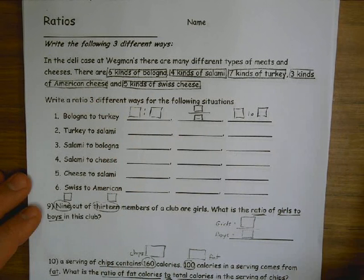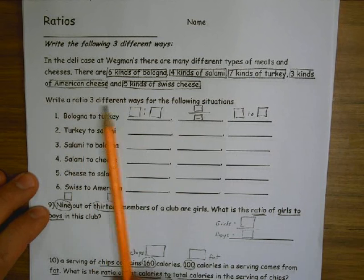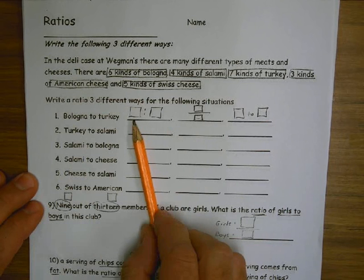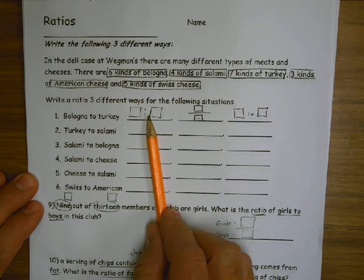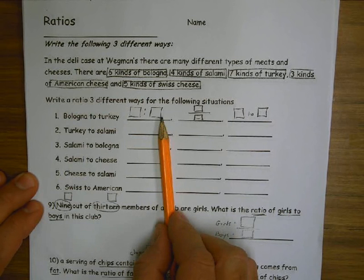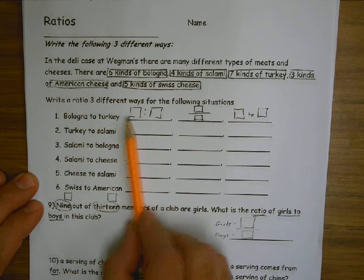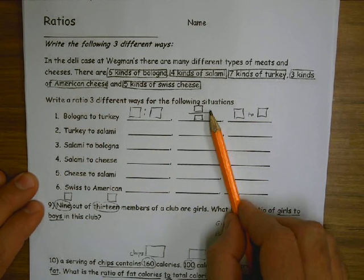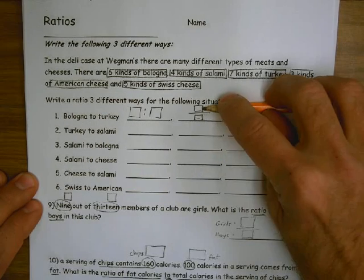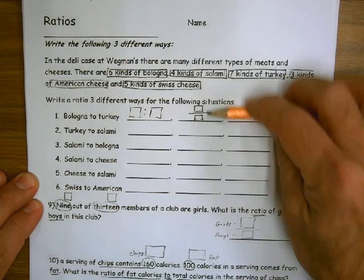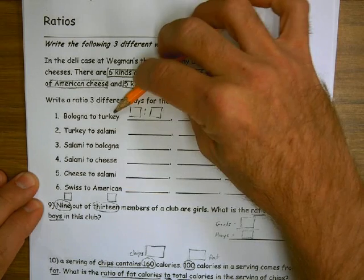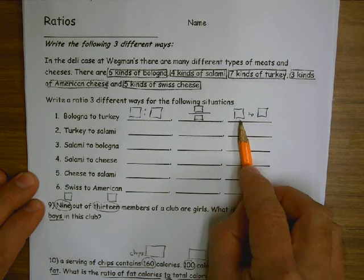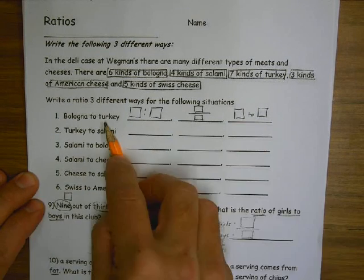So here's our work now. Write a ratio three different ways for these situations here on the side. And one way to write a ratio is with this colon here. Something compared to something, like bologna compared to turkey. We can also write a ratio a second way as a fraction. Something, bologna, compared to something, turkey. Or we can even write the word to in the middle. Bologna compared to turkey. And you write your answer.